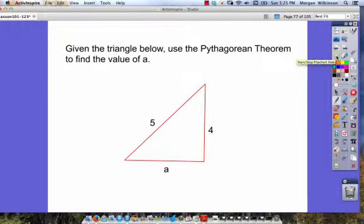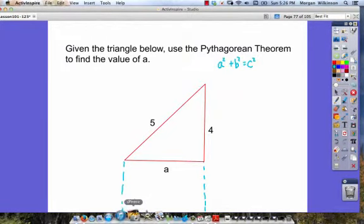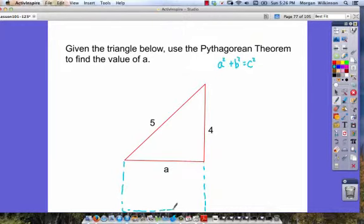Given the triangle below, use the Pythagorean Theorem to find the value of a. So we know the Pythagorean Theorem is a squared plus b squared is equal to c squared. So if we want to find the value of a, we need to make a square out of a. Looks like we're going to run just short on room here, we'll do our best.